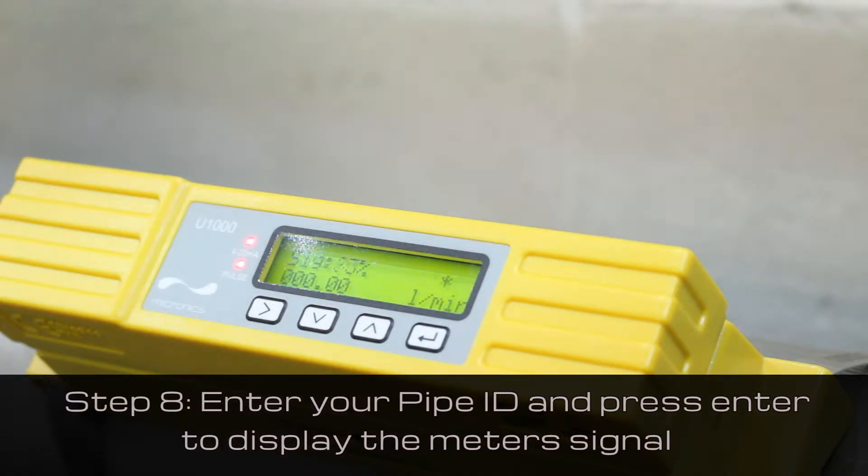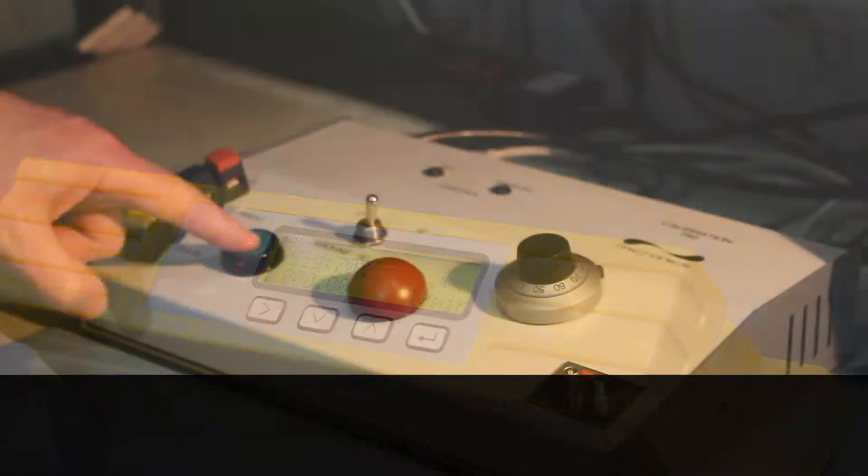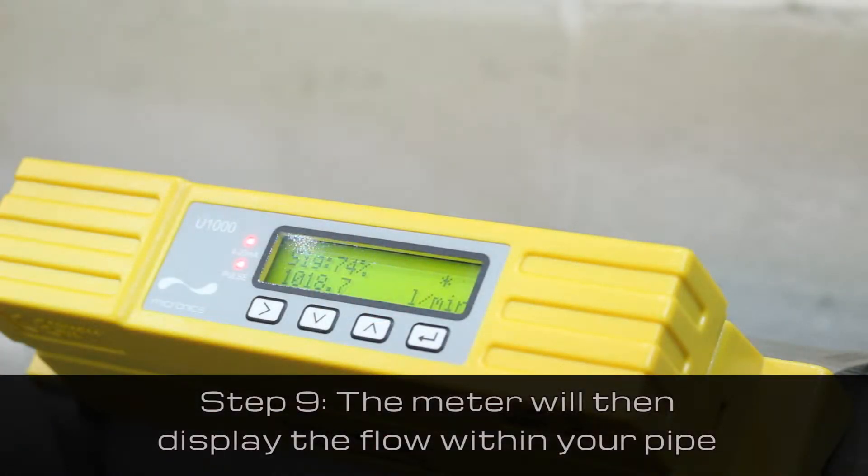This will display the meter's signal. Once the flow has been switched on, the meter will display the flow within your pipe.